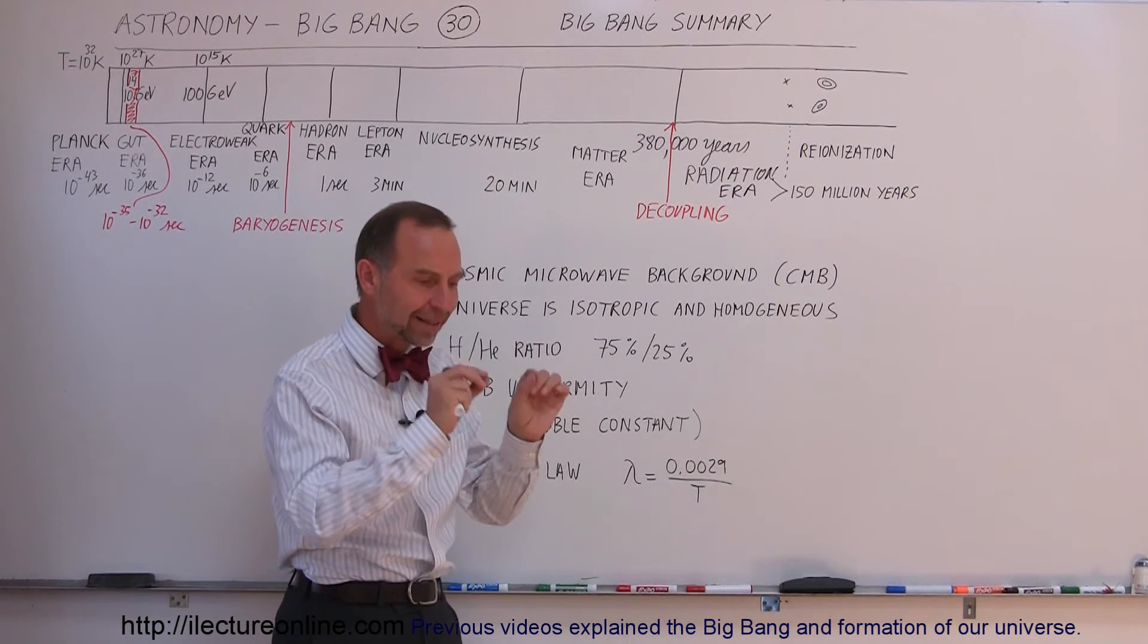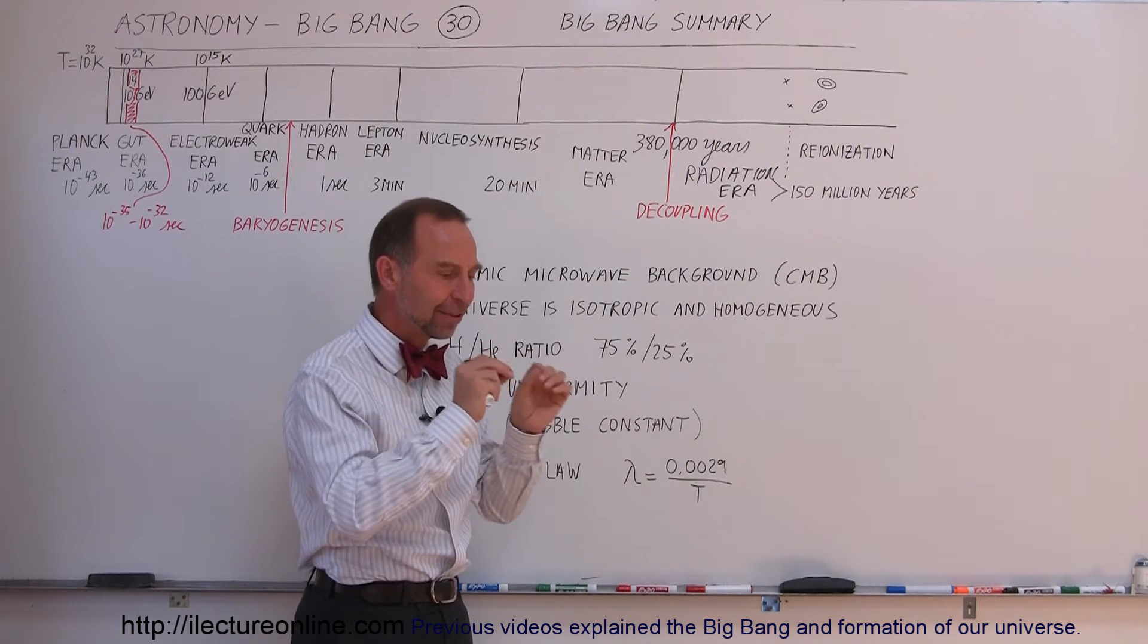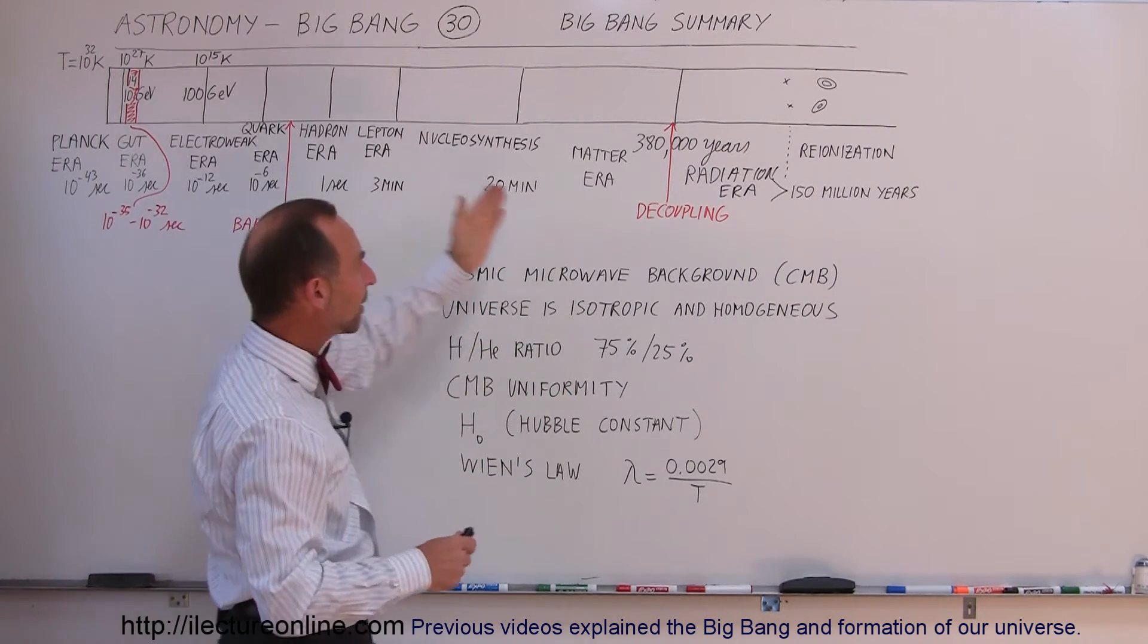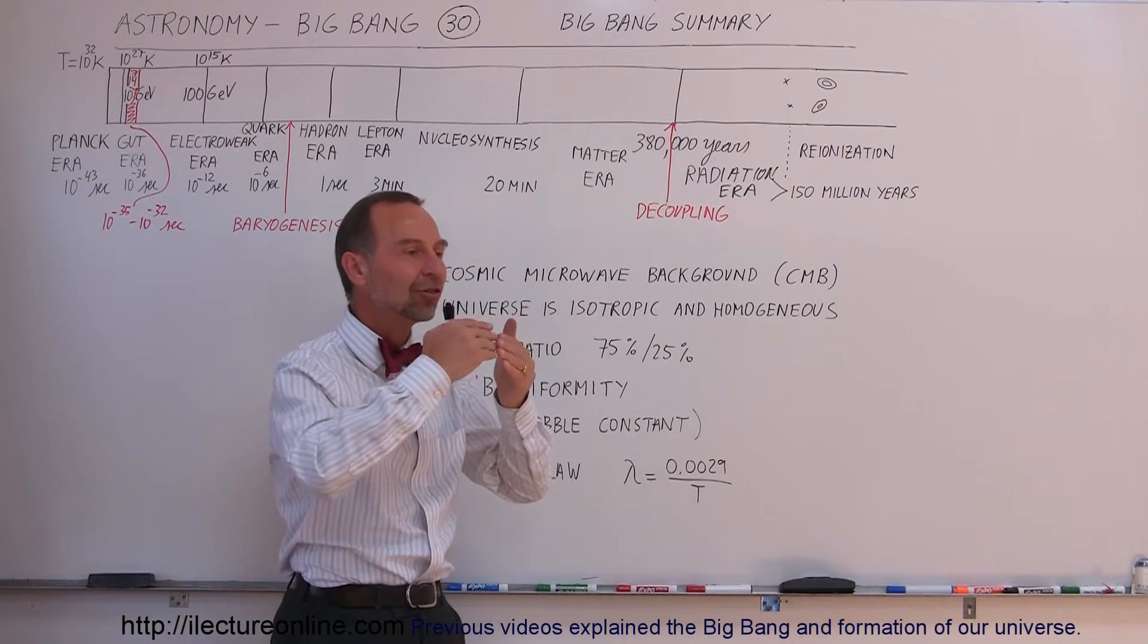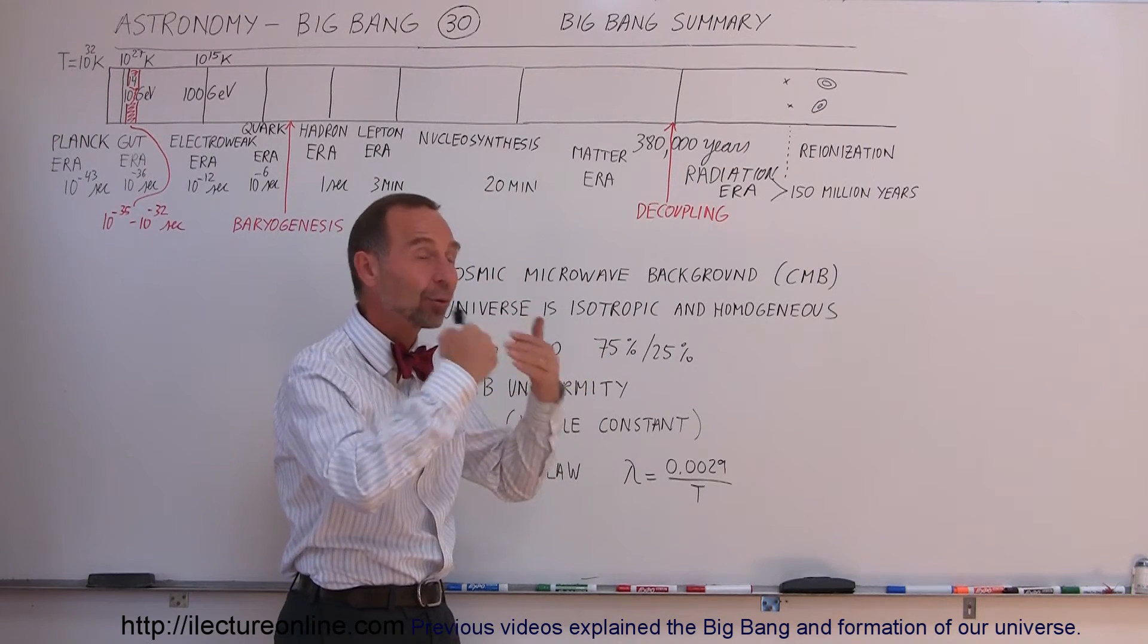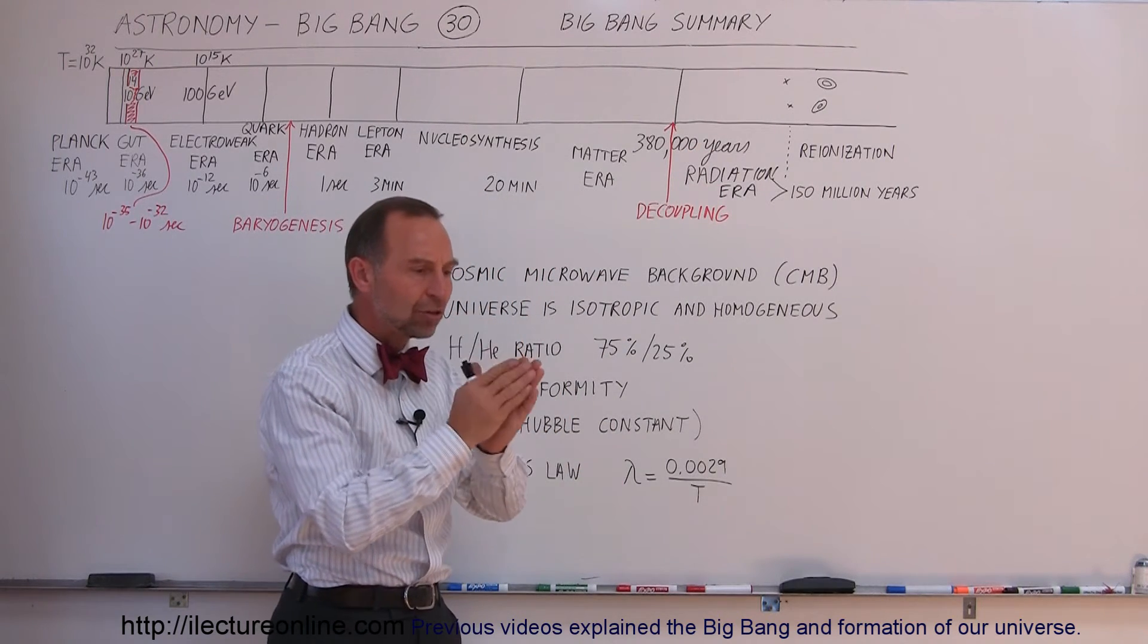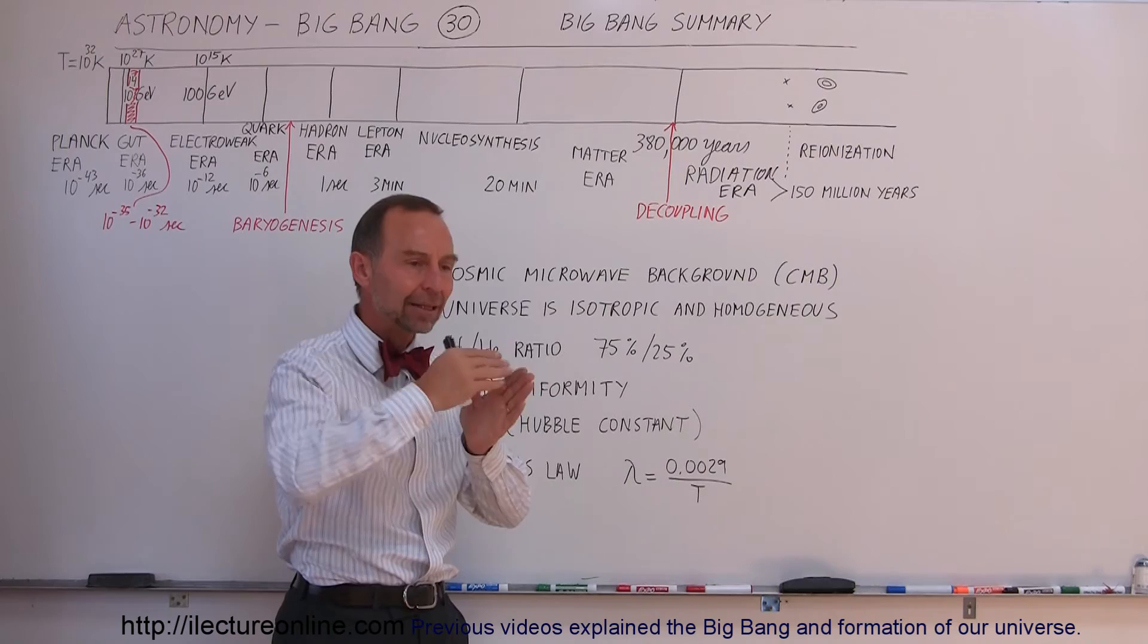But we did know that there were slight density fluctuations in the very beginning Universe, which then expanded to small variations in the density of matter that was then created from the radiation in the radiation era.